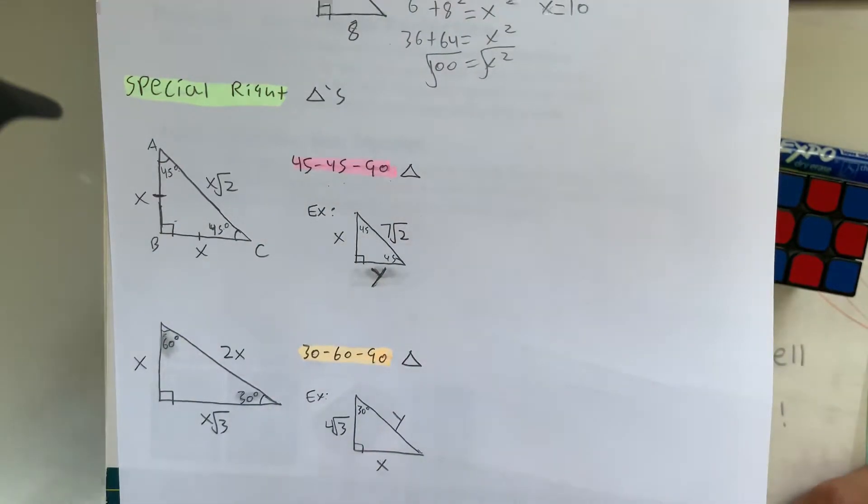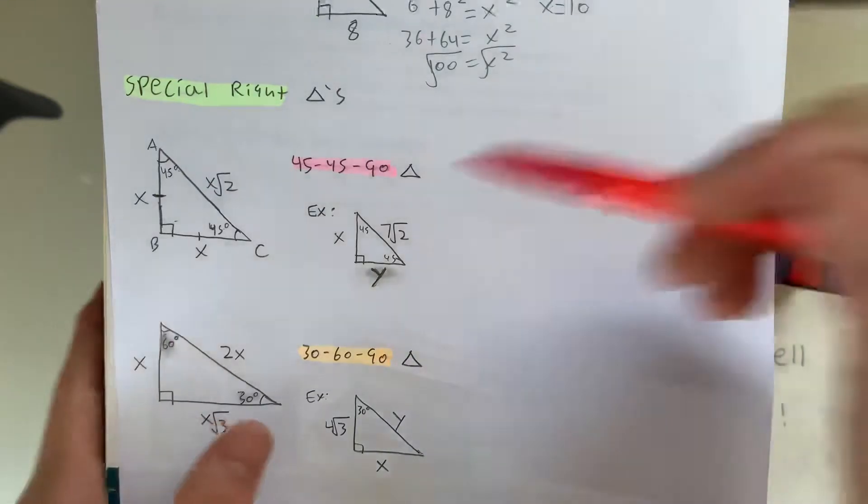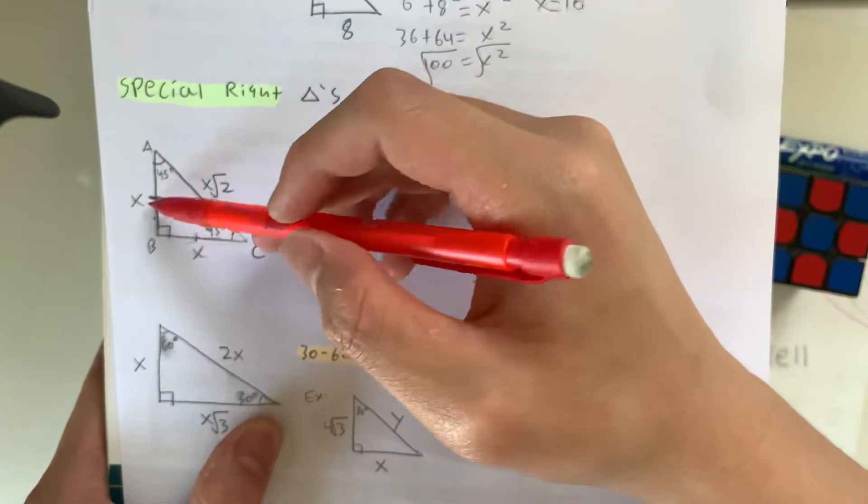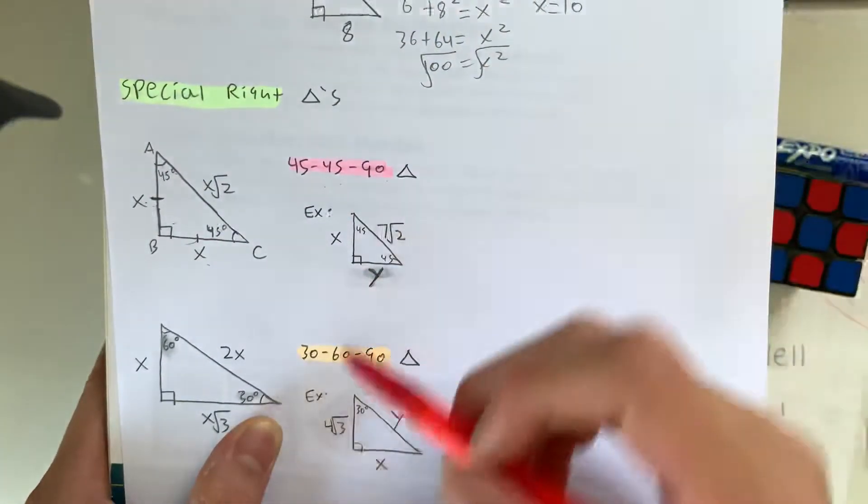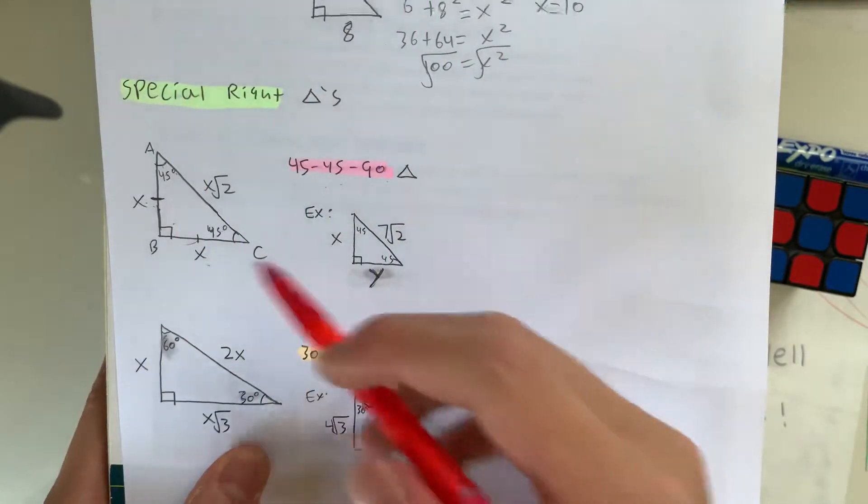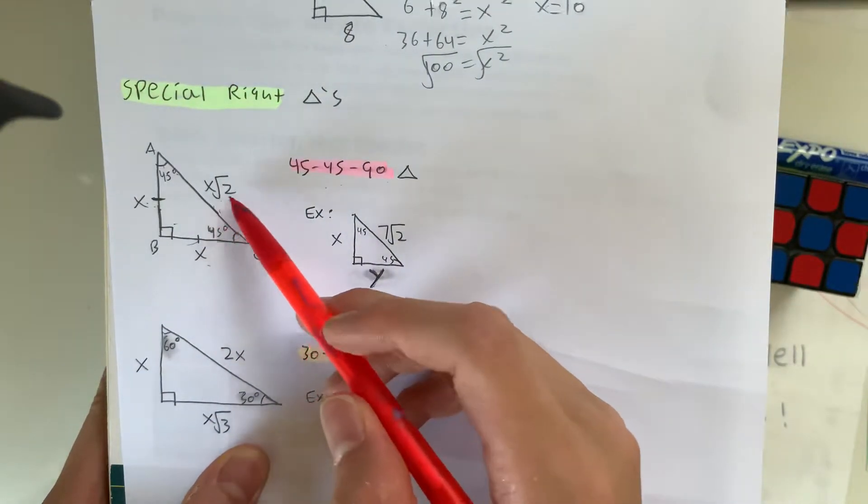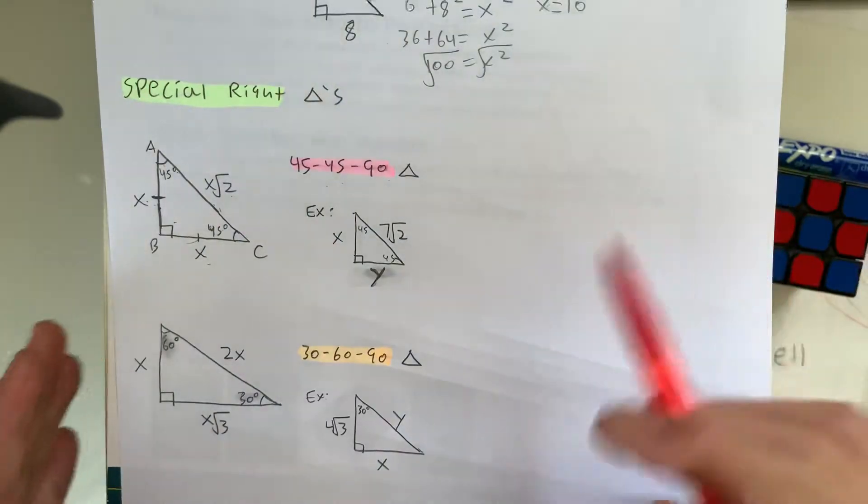So what you're going to do in this case is not use the Pythagorean Theorem, but memorize this special rule. So the length of the two legs are always going to be equal, and both of them are always going to be x. And the hypotenuse is going to be x times root 2, and that's going to be the case for everything.